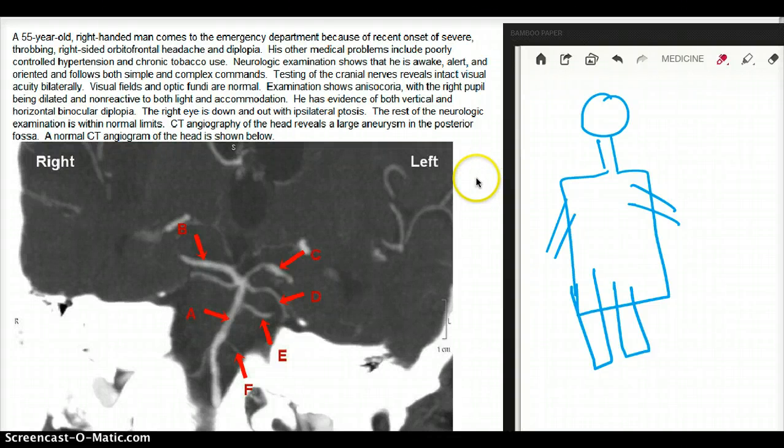This video talks about a 55-year-old right-handed man who comes to the emergency department because of recent onset of severe, throbbing, right-sided orbitofrontal headache and diplopia. So he really comes for headache, diplopia, and eye pain.